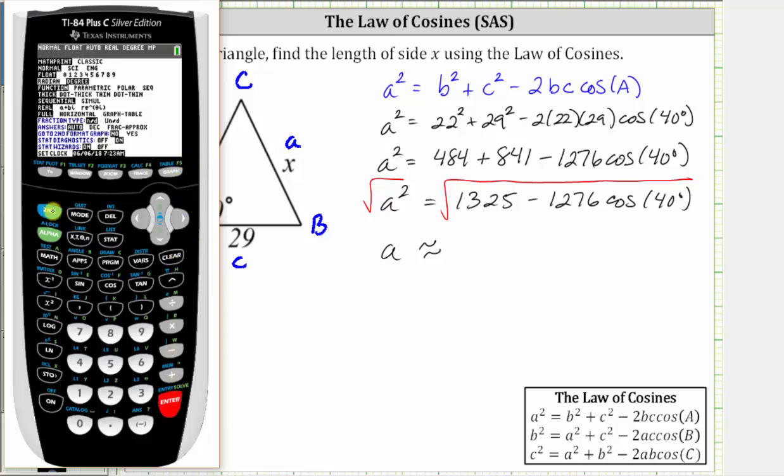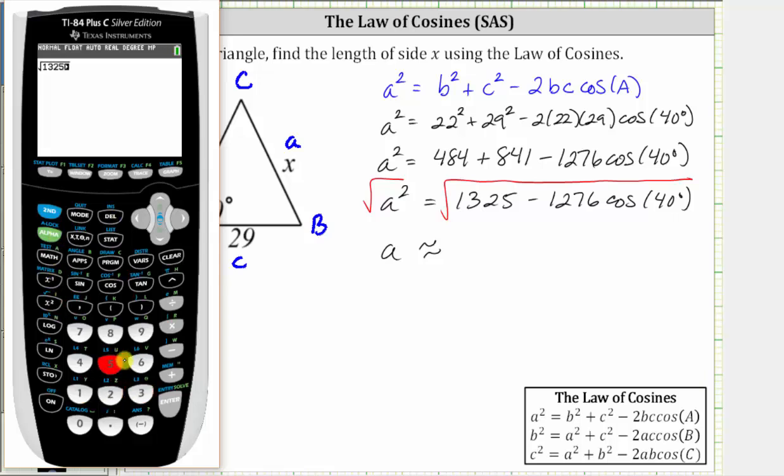To go back to the home screen, we press second mode for quit, and then we enter the right side of the equation. So we enter second x squared for the square root, then we have 1,325 minus 1,276 cosine 40 degrees, close parenthesis, and enter.